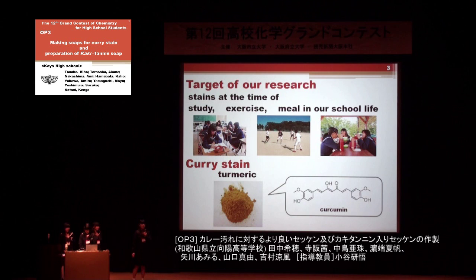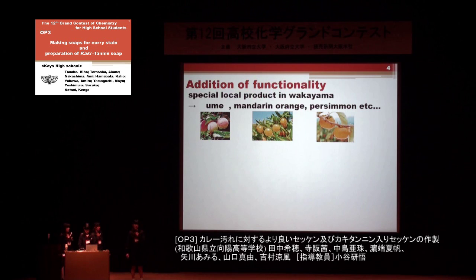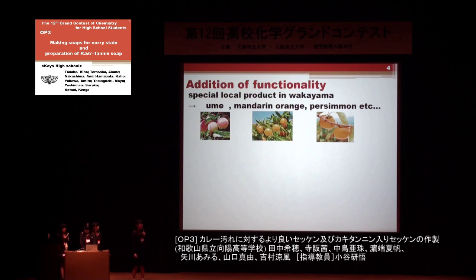On the other hand, soap needs not only strong cleaning power but also additional functions, for example fragrance and deodorant. To add additional function, we focused on special local products from Wakayama. Our school is located in Wakayama prefecture, and Wakayama is famous for Ume, Navel Orange, and Persimmon.